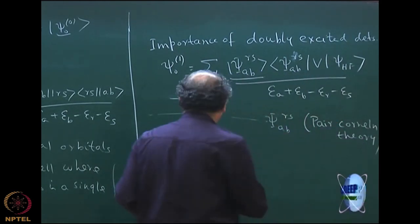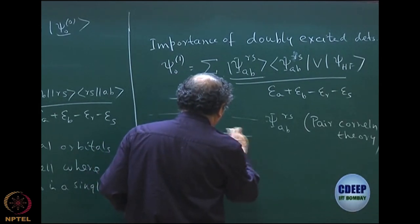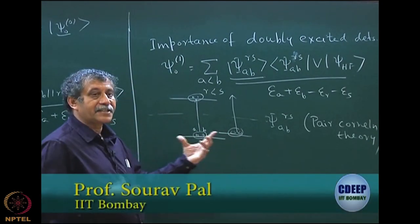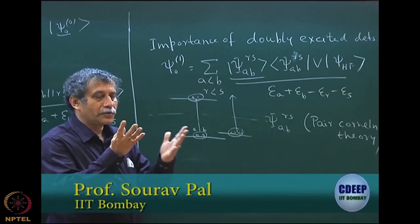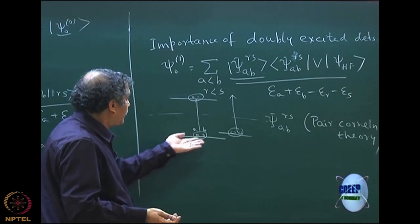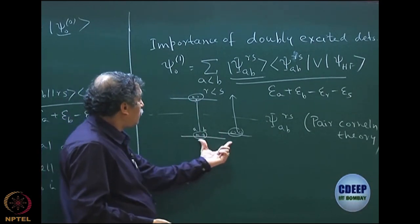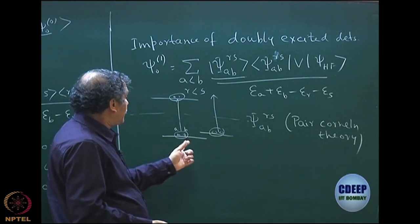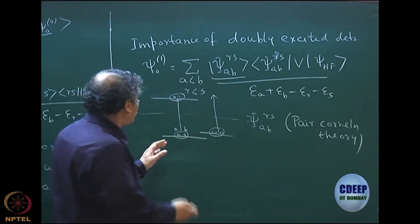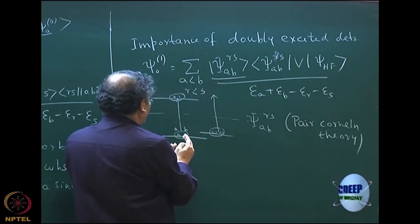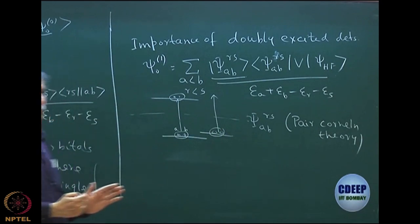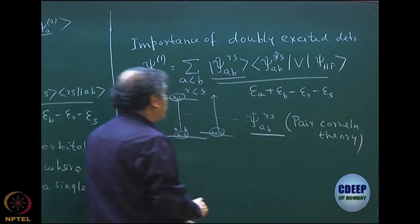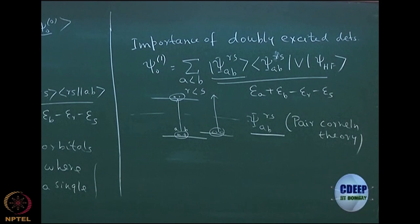For a many-particle problem, we can have another set of pairs which can also get excited, and these two excitations can take place at the same time. What you will see is actually a four-fold excitation — a quadruply excited determinant — but the probability of this taking place is a product of each independent pair. This is the content of Sinanoglu's pair correlation theory.